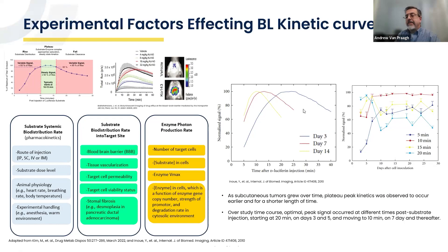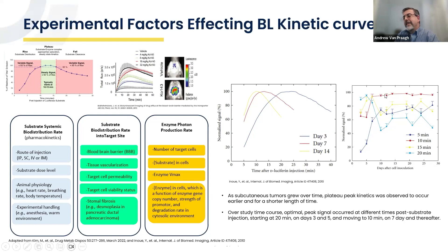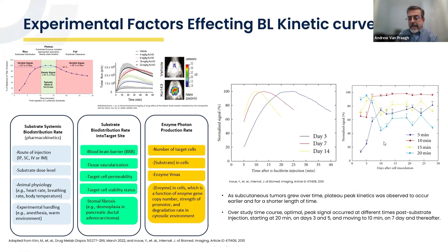If one was not aware of this and simply used a fixed time point for measuring bioluminescent data, the optimal data would be missed. For the first few days of a study, you would want to measure at 20 minutes to get peak kinetic data. However, as the time course progressed, the actual optimal time point for measurement would shift back to around 10 minutes. So the optimal measurement time point for getting peak kinetic data can vary even within a single study's time course.